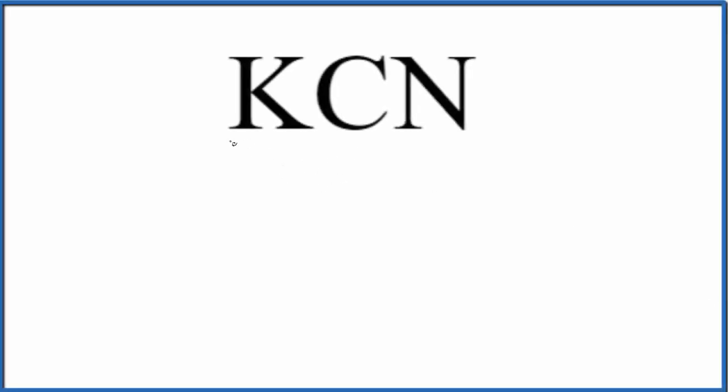In this video we'll write the Lewis structure for potassium cyanide. So first off we have potassium here, this is a metal, and cyanide, this is a polyatomic ion, it's a group of nonmetals. So because of that we have a metal and a group of nonmetals, this is an ionic compound, so we're gonna have to think about how the electrons are transferred from the metal to the group of nonmetals here.